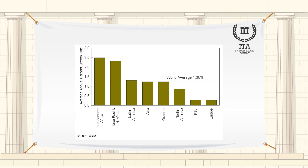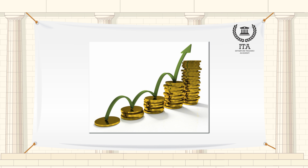Exponential growth applies to populations too. If a population grows at 7% per year, it too will double in 10 years. There are surprising consequences to the phenomenon of exponential growth.